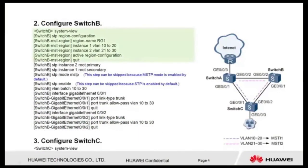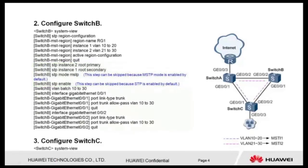Step 2: Configure switch B. Configure the MST region name of switch B, map VLANs to MSTi1 and MSTi2, and activate the MST region configuration. Configure switch B as the root bridge in MSTi2 and secondary root bridge in MSTi1. Configure switch B to work in MSTP mode and enable MSTP. Configure layer 2 forwarding on switch B.